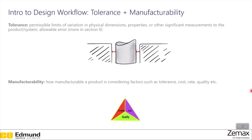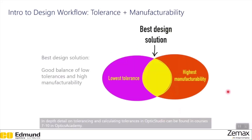The manufacturing triangle shows the three key components of manufacturability. When one changes, the other two will also adjust accordingly. The three main components are: scheduling — the timing of production; cost — how much it will cost to make the product; and quality — how good the quality of the product needs to be for its given application. The best design solution will usually balance low tolerances and high manufacturability.